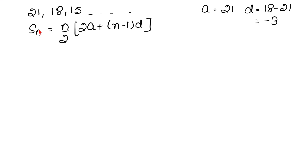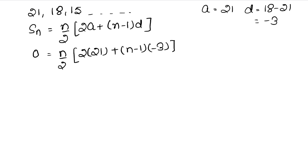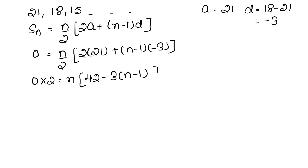SN 0 आना चाहिए। तो 0 equals to n by 2 into 2a plus n minus 1 into d। n हमें पता नहीं है, a है 21, d है minus 3। यह 2 इधर जाके 0 में multiply होगा, तो 0 into 2 = 0। 21 times 2 is 42, plus minus 3 into n minus 1।